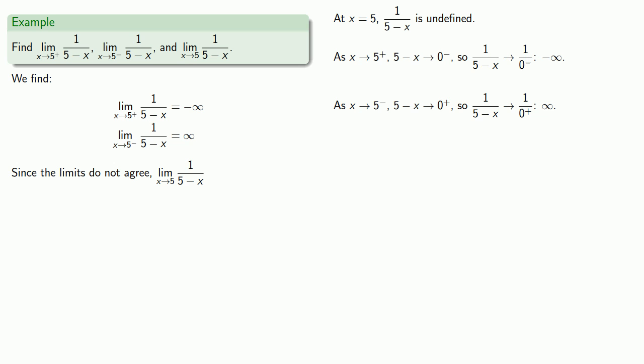Finally, since the limits do not agree, the limit as x approaches 5 of 1 over (5 minus x) is non-existent.